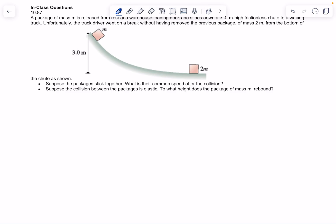We've got, suppose the packages stick together, what is their common speed after the collision? Now, first of all, you have to find what is the velocity of box 1 when it gets to the bottom of the hill.